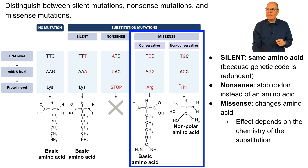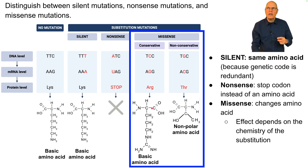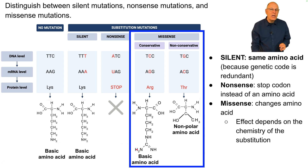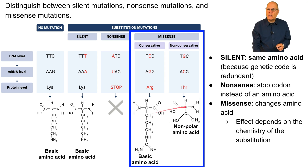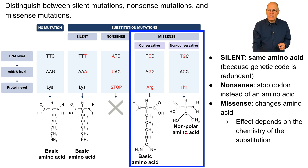The effect of a missense mutation depends on the chemistry of the substitution. A conservative missense mutation is one where the chemistry is of less significance. Lysine is a basic amino acid with an amino group at the end, and so is arginine — so that might not change the structure or function of the protein very much. On the other hand, substituting threonine, which is a non-polar amino acid, for lysine would be a big deal. That's a very significant change in chemistry, and it will impact the function of the protein.